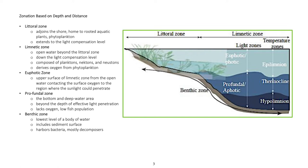Zonation is based on depth and distance. The littoral zone adjoins the shore, is home to rooted aquatic plants and phytoplankton, and extends to the light compensation level. The limnetic zone is the open water beyond the littoral zone, down to the light compensation level, composed of planktons, nektons, and neuston, and derives oxygen from phytoplankton. The euphotic zone is the upper surface of the limnetic zone from the open water contacting the surface oxygen, to the region where sunlight can penetrate.